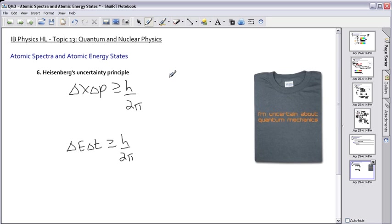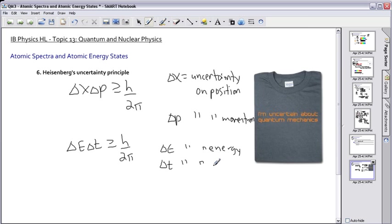Now let's define these things. What delta x is is the uncertainty on position. Whereas the delta p, of course, is the uncertainty on momentum. Now, of course, the delta e then is the uncertainty on energy and the delta t, the uncertainty on time. So this tells us something about uncertainty on position. So your delta p, delta e, delta t.